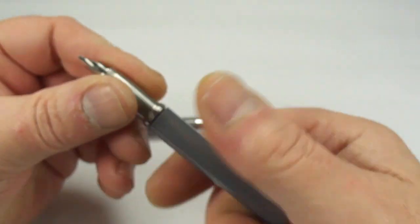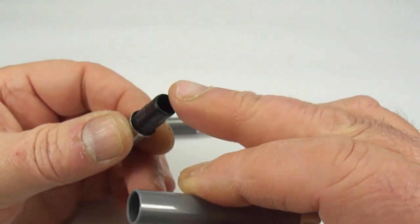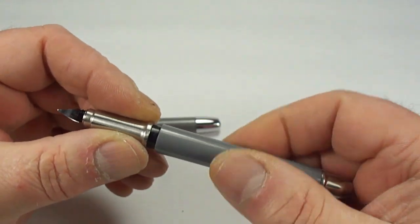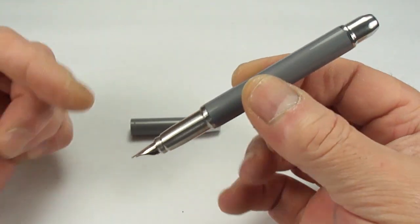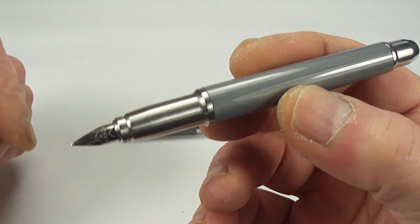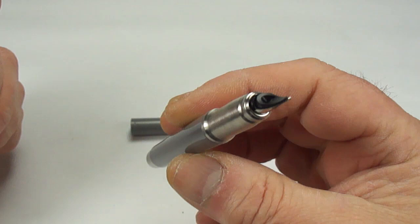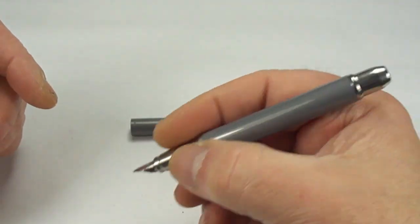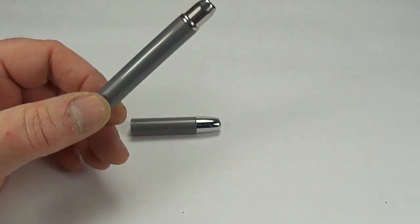If we unscrew this section for you, there's the barrel. As you saw earlier, it takes cartridges. Whether it actually would accept a converter, I'm not 100% sure, but I would say I see no reason why it would not, because it accepts the standard cartridges from Parker. So I'm sure it would accept a converter. Now I'm not going to fill the pen because, as I say, the pen's never been inked, but I know you people like to see pens writing.